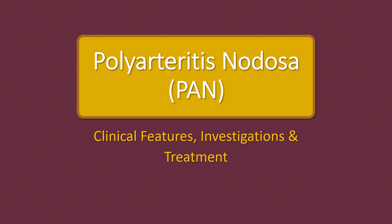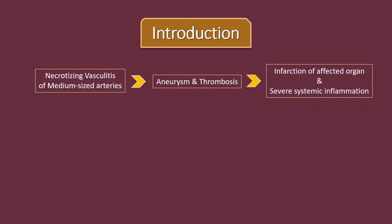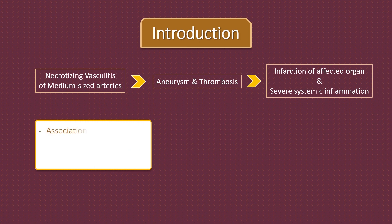Systemic vasculitis should be considered in any patient with fatigue, evidence of multi-system involvement, rashes, raised inflammatory markers and abnormal urinalysis. Polyarteritis nodosa is a necrotizing vasculitis that causes aneurysms and thrombosis in medium-sized arteries, leading to infarction in affected organs with severe systemic symptoms. Hepatitis B infection is an important risk factor, so all patients with polyarteritis nodosa shall be tested for hepatitis B.